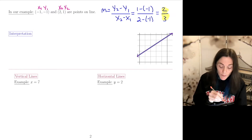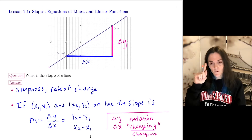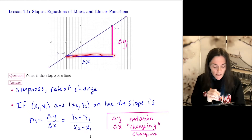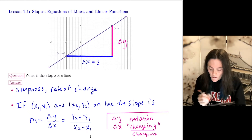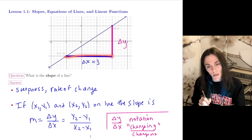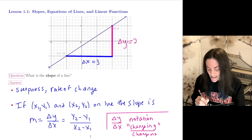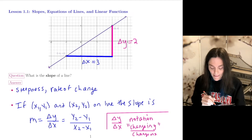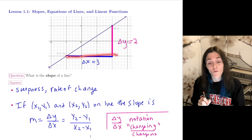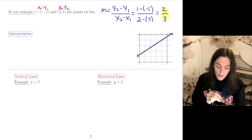I want to talk about the interpretation of slope. We can see it on the graph: if you move delta x — which we calculated is 3 units — along the x direction, and also move delta y — which is 2 units — along the y direction, you return to the line. So we move over by 3 and up by 2, and we are back on the line.